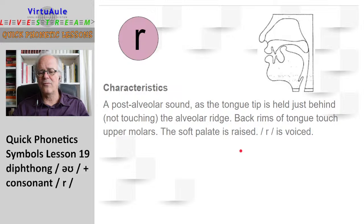Here we have the R. The R is a post-alveolar sound as the tongue tip is held just behind, not touching, the alveolar ridge. The back rims of the tongue touch the upper molars. The soft palate is raised. R is voiced. You see, just before the alveolar ridge, the tongue comes up and turns a little bit back. It's just before the ridge. It forms a passage here. It does not click. It's not clicking. It's relaxed. It's a long sound.